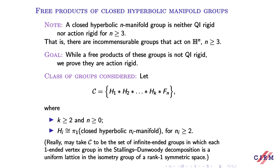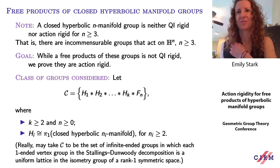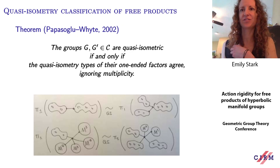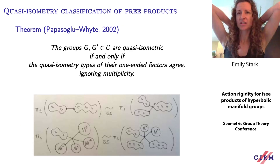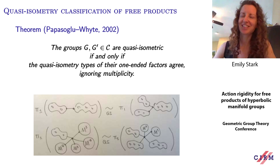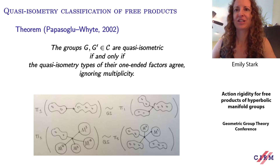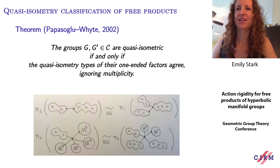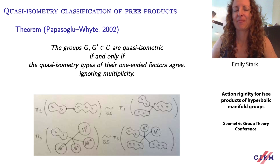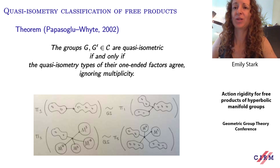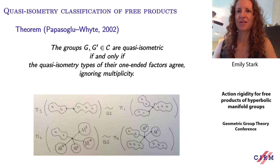A group in this class is not quasi-isometrically rigid. This follows from the quasi-isometry classification for free products given by Papasoglu and Whyte in 2002 for general finitely presented free products. They prove that if two groups in this class are quasi-isometric, that happens if and only if the quasi-isometry types of their one-ended factors agree, ignoring multiplicity. For example, free products of any finite collection of surface groups are quasi-isometric. In general, you just keep track of the set of dimensions that occur in the free products, not how many times — so there is a lot of flexibility in creating quasi-isometric groups.